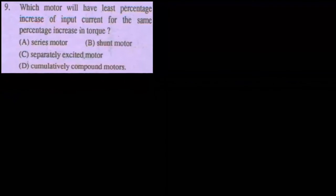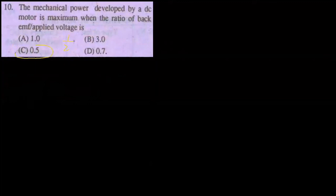Next MCQ: Which motor will have the least percentage increase of input current for the same percentage increase in torque? The correct option is the series motor — that is why we call it a high torque motor. The last MCQ: Mechanical power delivered by a DC motor is maximum when the ratio of back EMF to applied voltage is 0.5, i.e., 1/2.